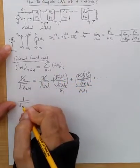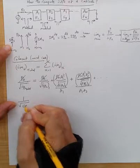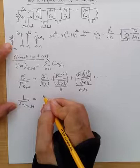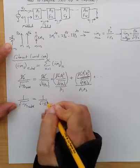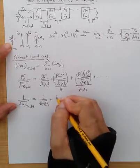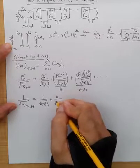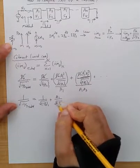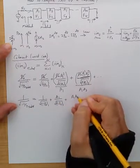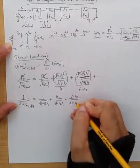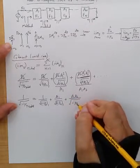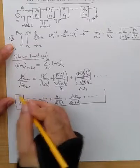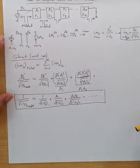So it becomes IIP2 total is 1 over square root of IIP2 of first stage, plus A1, which is the voltage gain of first stage, divided by IIP2 of second stage, plus A1, A2, divided by IIP2 of third stage, and so on. This is the way we compute worst case IIP2 for the overall cascade, in case of a coherent assumption about how the generated intermod products are added up.